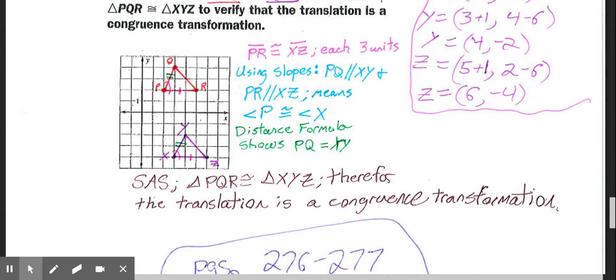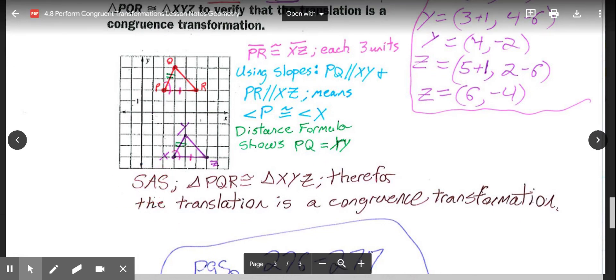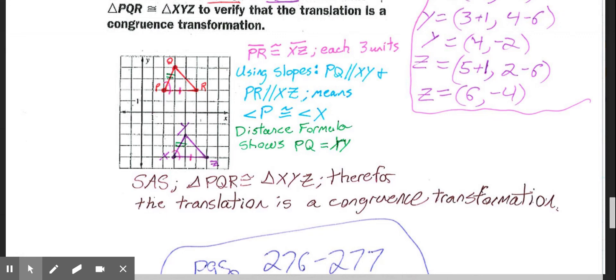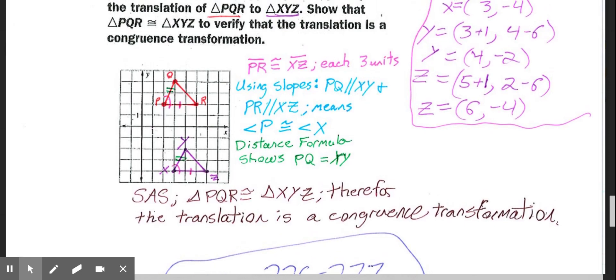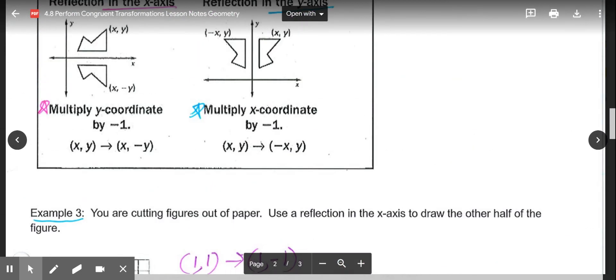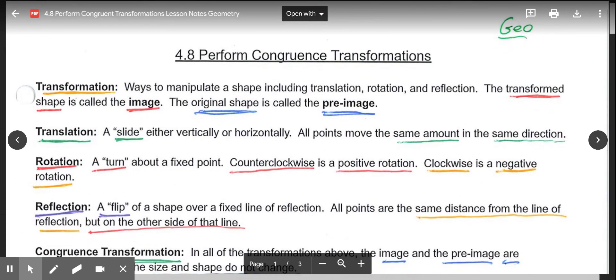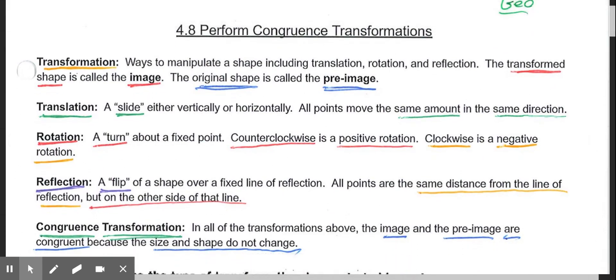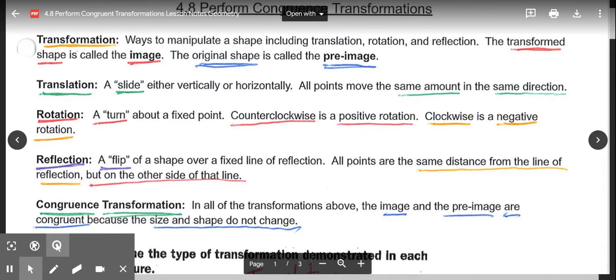No matter which route you go - angle-angle-side, or side-angle-side, could even do side-side-side if you wanted to do a lot of distance formula - all the times we still see that triangle PQR is congruent to triangle XYZ. Therefore, the translation is a congruence transformation. So just verifying the rule that we had way back at the beginning of the notes. The main piece for this lesson comes back to these definitions and the idea of congruence transformations.